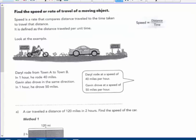Find the speed or rate of travel of a moving object. Speed is a rate that compares distance to the time taken. It's distance divided by time. Here's the formula: Speed equals distance divided by time.